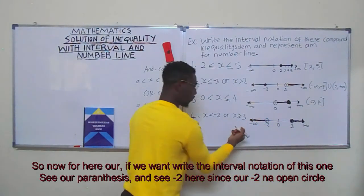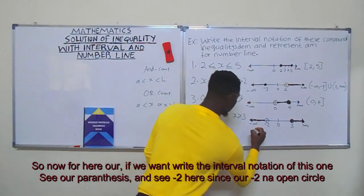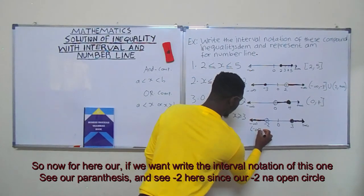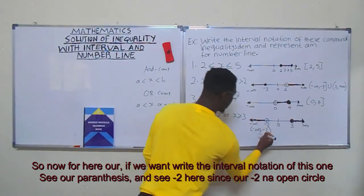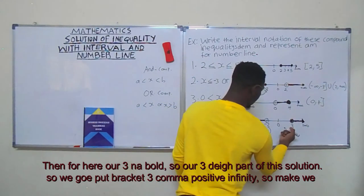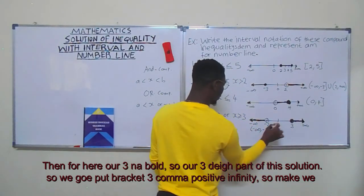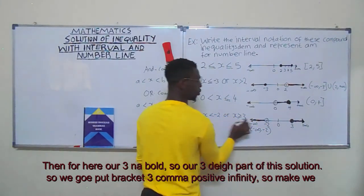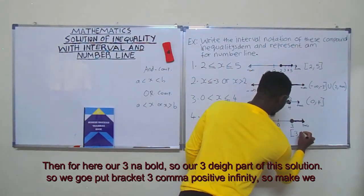To write the interval notation: for minus two with an open circle, we use an open parenthesis: (-∞, -2). For minus three with a closed circle, minus three is part of the solution, so we use a bracket: [-3, +∞).